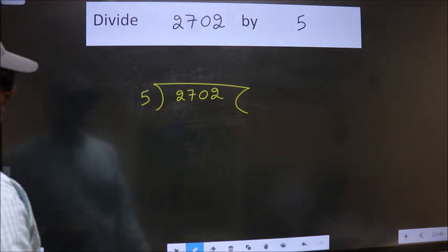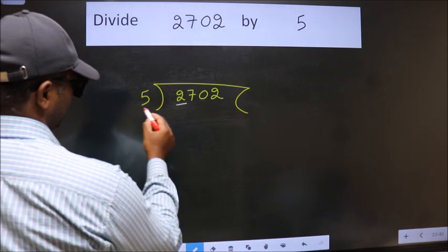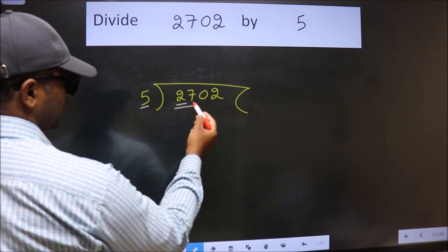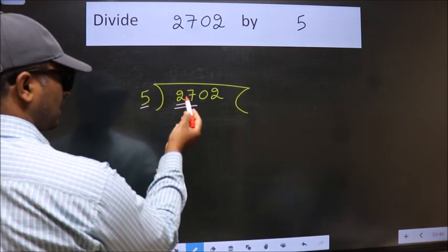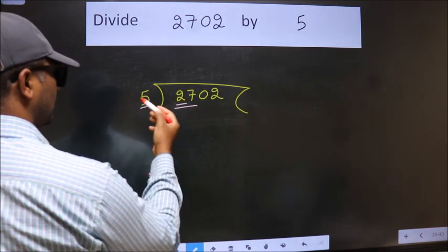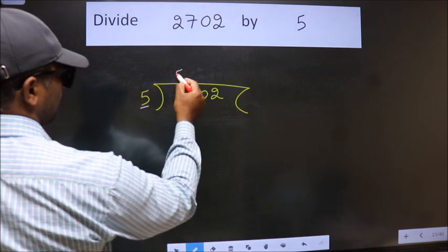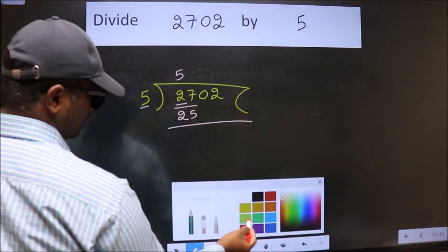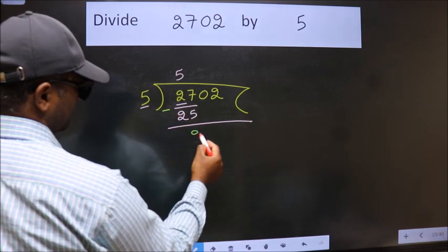Next, here we have 2, here 5. 2 is smaller than 5, so we should take 2 numbers, 27. A number close to 27 in 5 table is 5 fives, 25. Now we should subtract. We get 2.